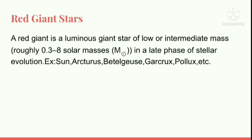Now we're going to talk about red giant stars. A red giant star is a luminous giant star of low or intermediate mass in a late phase of stellar evolution. Examples: the Sun, Arcturus, Betelgeuse, Gacrux, Pollux, etc.